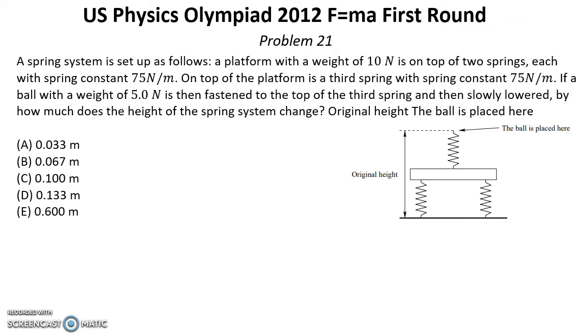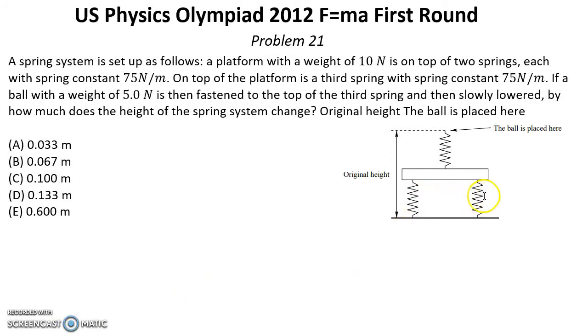In this problem we need to count the spring constant for parallel connected springs and series connected springs. Two lower springs are connected in parallel, so equivalent k1 equals 2k. The upper spring is connected to these lower springs in series, so total k can be counted like this. k2 equals two-thirds k.